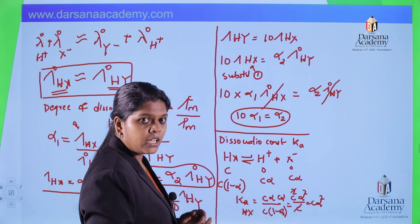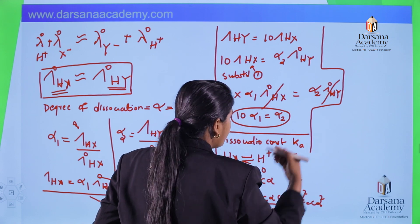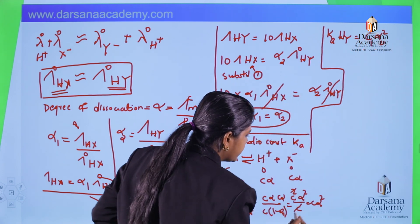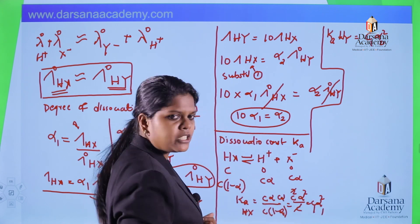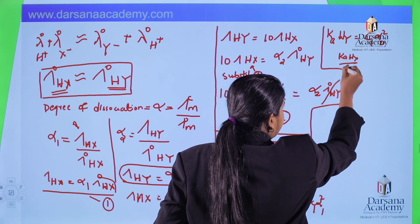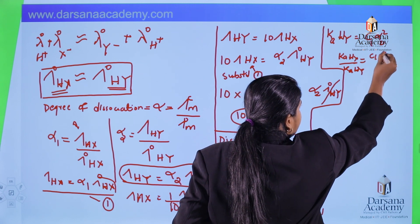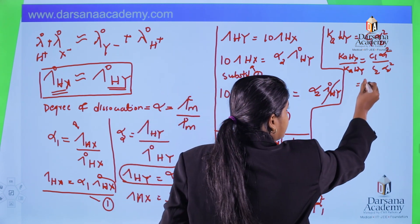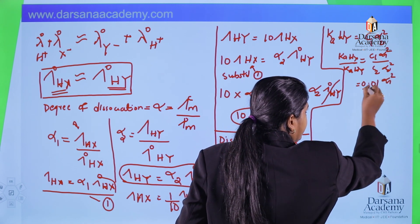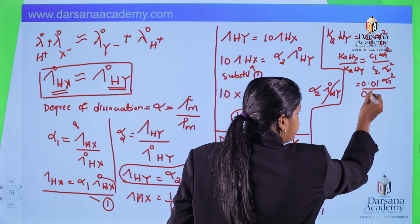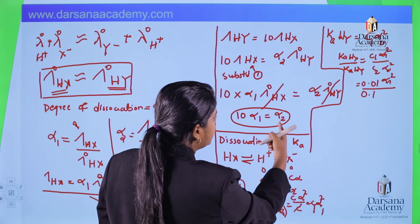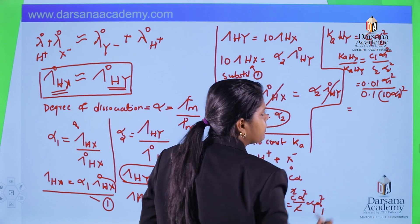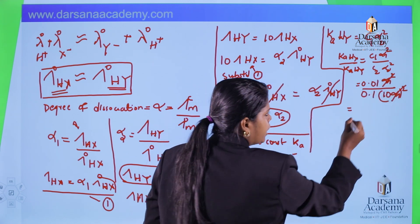Taking the ratio Ka(HX) / Ka(HY) = (C₁α₁²) / (C₂α₂²). The concentration of HX is 0.01 and HY is 0.1. Substituting α₂ = 10α₁, we get (0.01 × α₁²) / (0.1 × (10α₁)²). The α₁² cancels, giving 10⁻³.